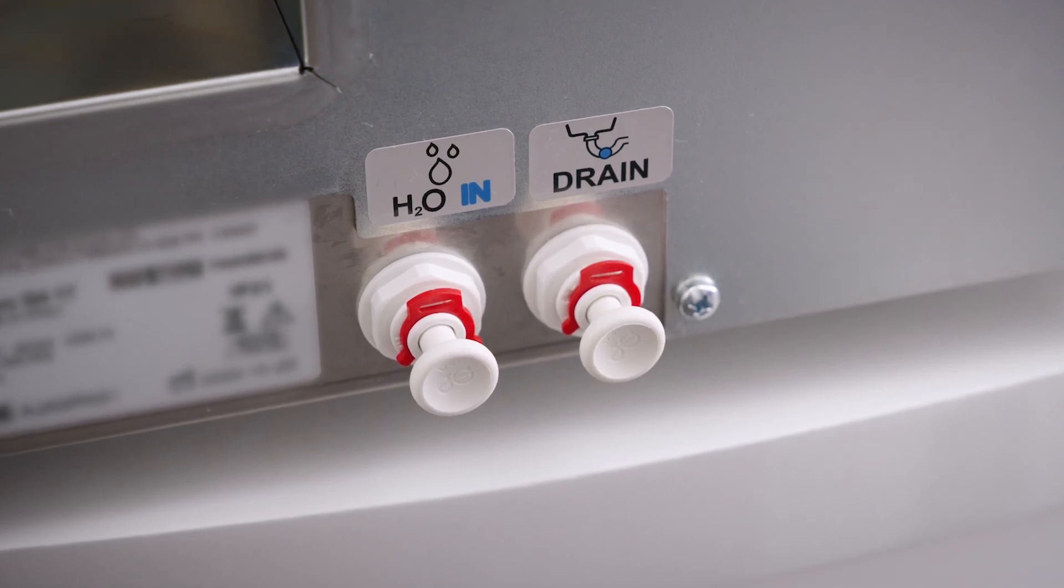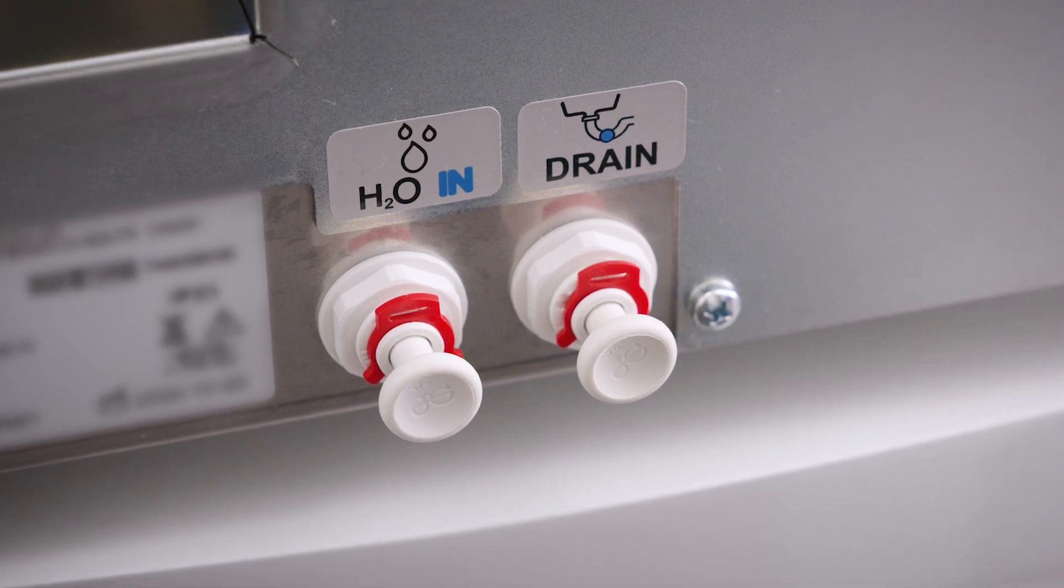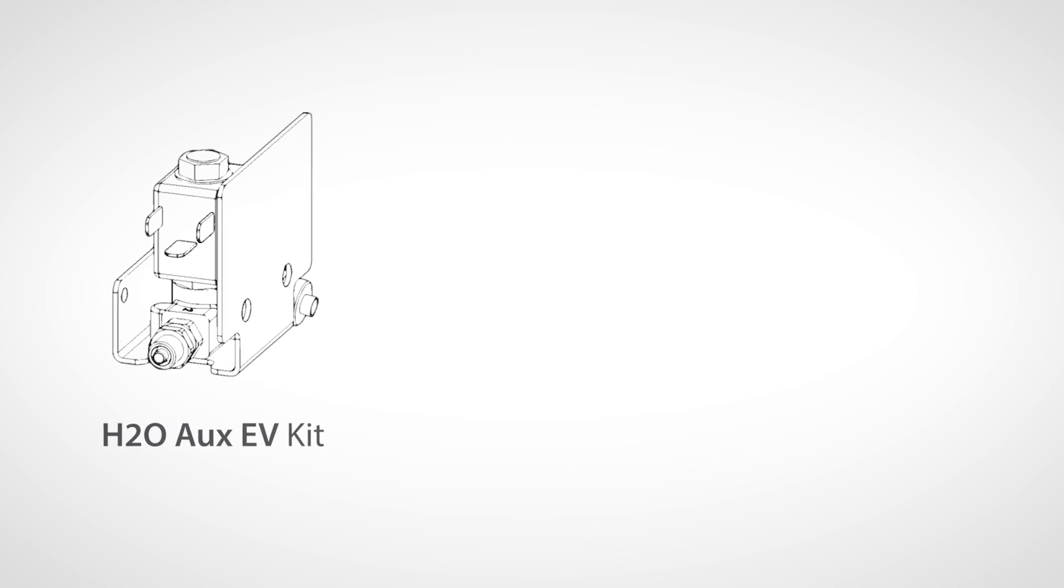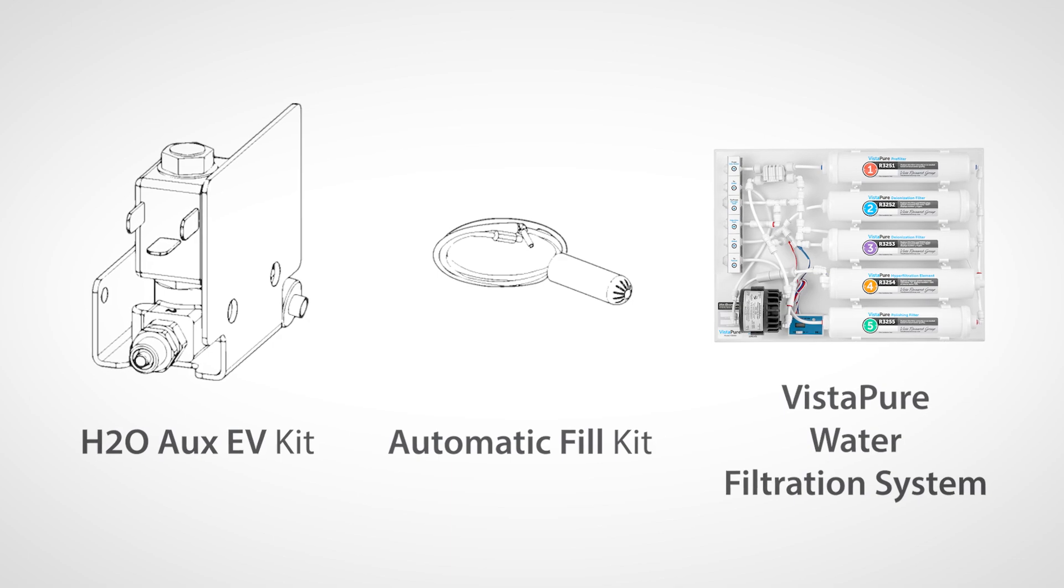The preferred method for filling is to use the automatic filling option, which ensures your sterilizer has a constant supply of demineralized water. This can be done using one of the several options available, such as the H2O auxiliary EV kit, the automatic fill kit, and the Vistapure water filtration system.